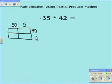I'm going to use extended multiplication to solve the problem. So 40 times 5 is 200. 40 times 30 is 1,200. 5 times 2 is 10. 2 times 30 is 60.